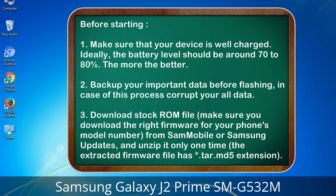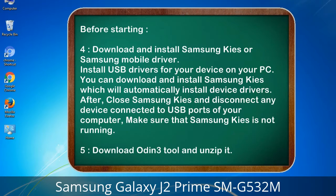Make sure you download the right firmware for your phone's model number from Sammobile or Samsung Updates, and unzip it only one time. The extracted firmware file has a *.tar.md5 extension. 4. Download and install Samsung KIS or Samsung mobile driver to install USB drivers for your device on your PC. Samsung KIS will automatically install device drivers. After installing, close Samsung KIS and disconnect any device from USB ports, making sure Samsung KIS is not running. 5. Download Odin 3 tool and unzip it.